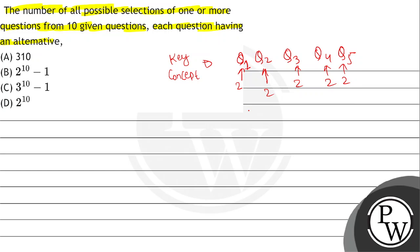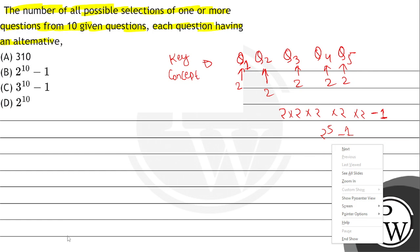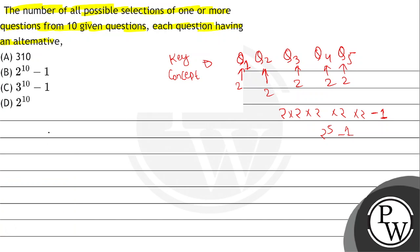So the total number of possibilities for a student to appear in this examination is basically 2 × 2 × 2 × 2 × 2, which is 2 to the power 5, minus 1. This minus 1 is because if the student has to attempt at least one question, we need to exclude the situation where the student has not attempted any question. So we get 2 to the power 5 minus 1.